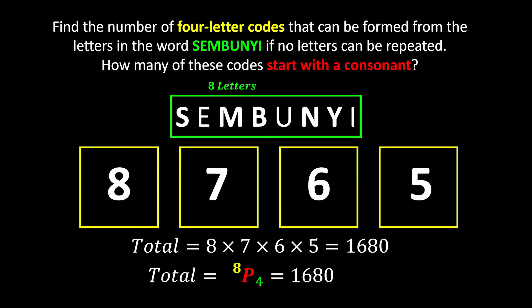In the end I have 1680 ways, which I can write as 8P4 — P means permutation, where the arrangement does matter. We have 8 choices but only need 4 because we only pick 4 letters. This is why we have 1680 ways.